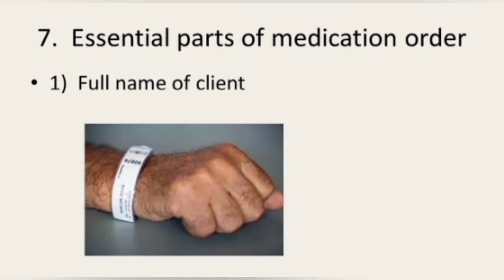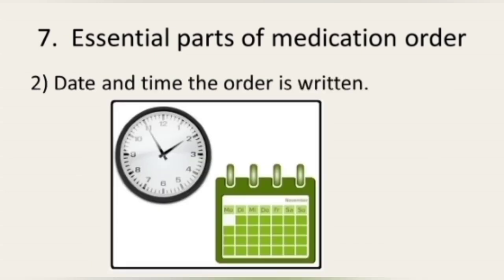The second essential part of a medication order is the date and time the order is written. Writing the time of day on an order can eliminate errors when the nursing shift changes. Many health agencies use a 24-hour clock, which eliminates confusion between morning and afternoon times.